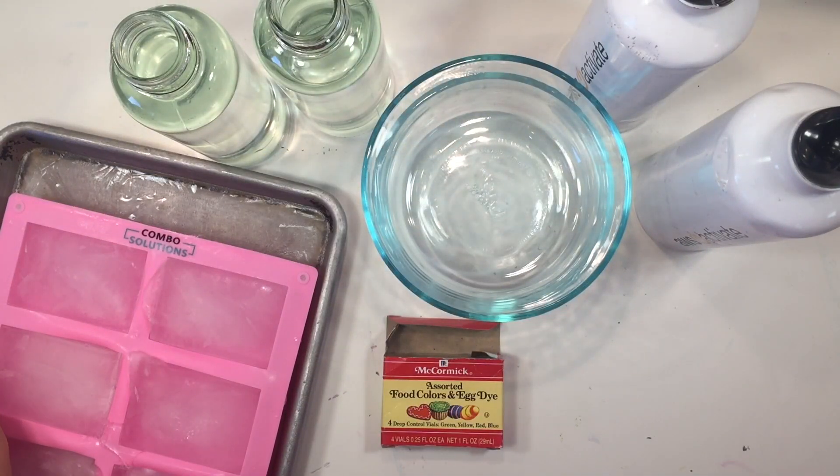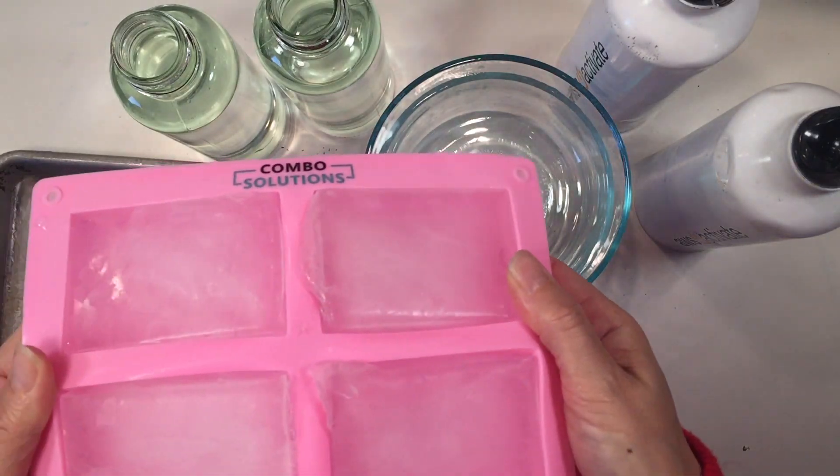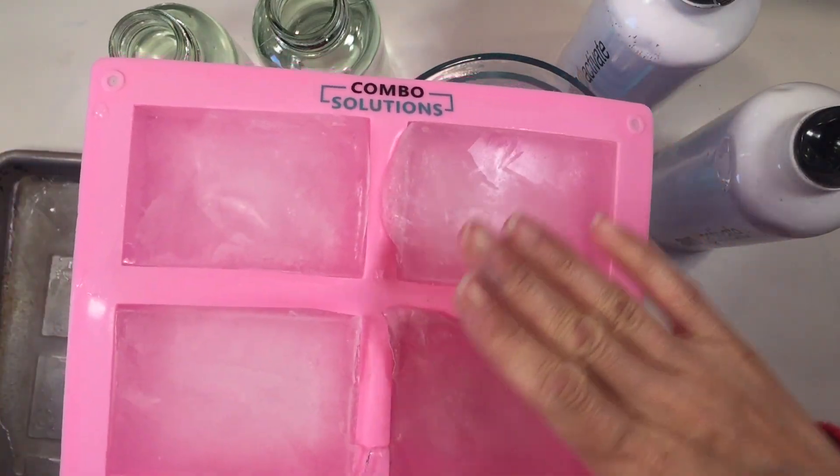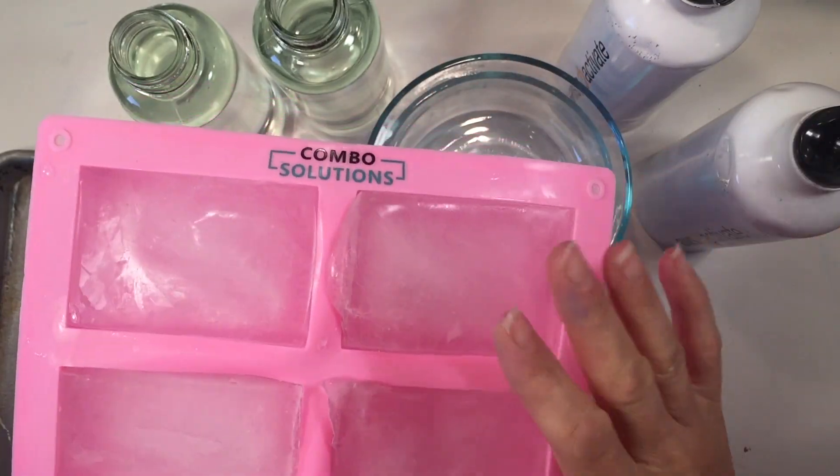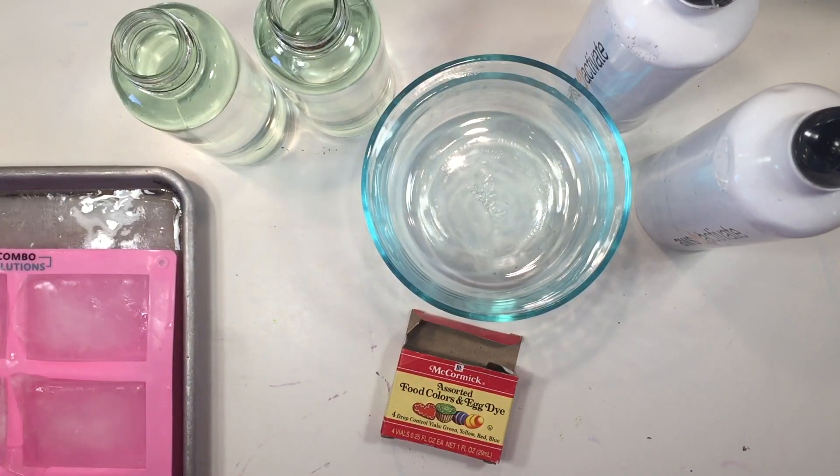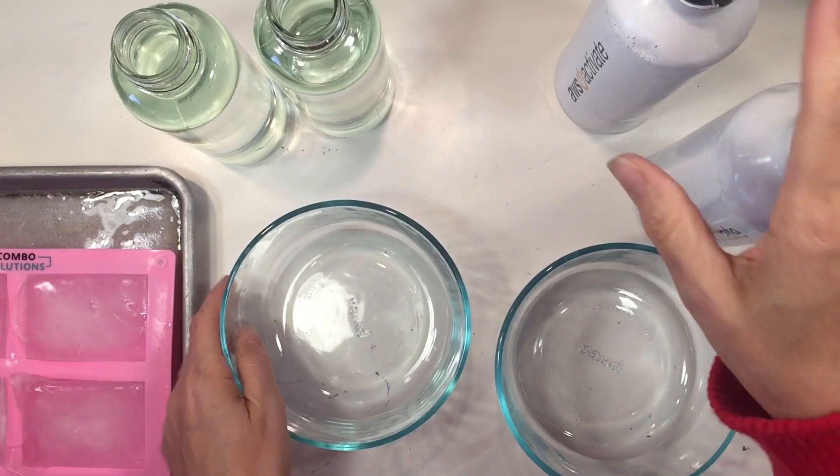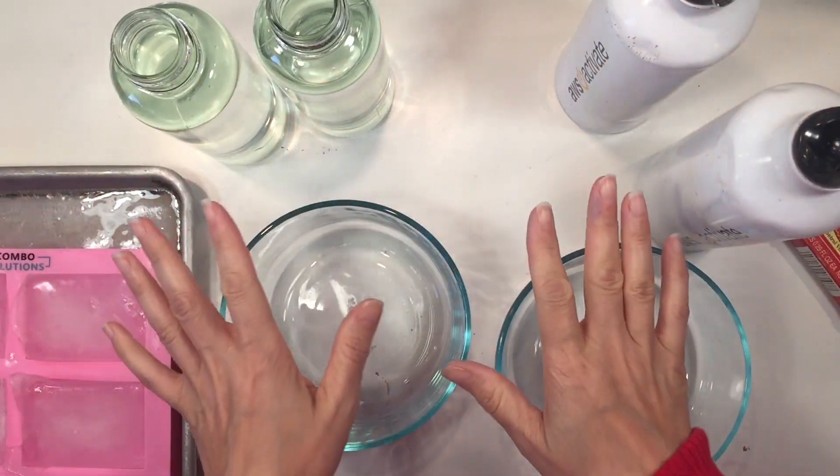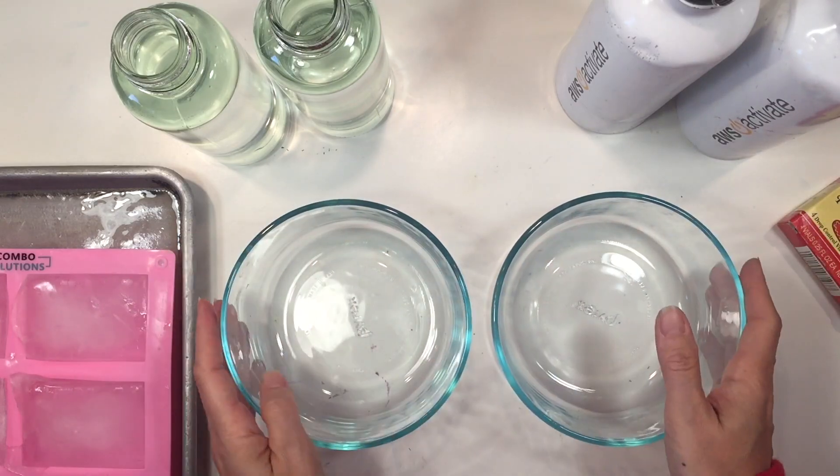We went ahead and made some ice cubes that are fairly large, and we did try to make them as even as possible by filling them up to the rim. You can see that it does expand because that's what happens when water turns to ice. Next we're going to fill these two containers with the same amount of water. All this water has been at room temperature for a few hours so it should be the same temperature for both.